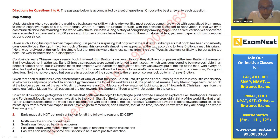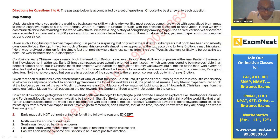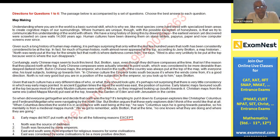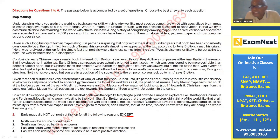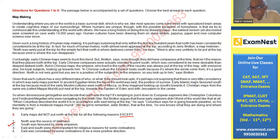The next question asks: early maps did not put north at the top for all the following reasons EXCEPT. North was thought to be a source of darkness; east and south were more important for religious reasons for some civilizations; east was considered a more positive direction by some civilizations. The only reason that doesn't apply is 'south was favored by some emperors,' so the correct answer is number two.